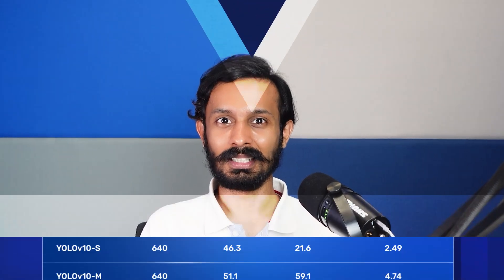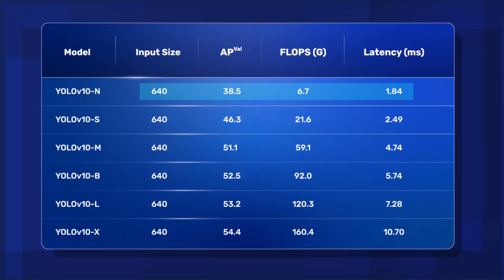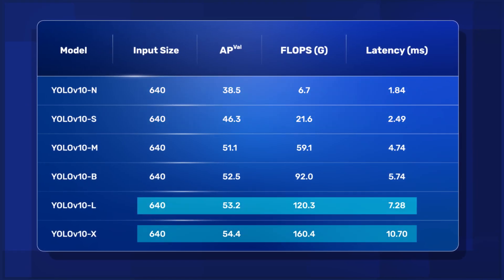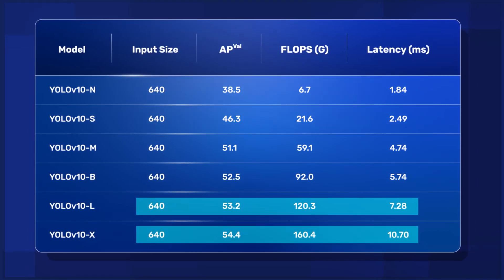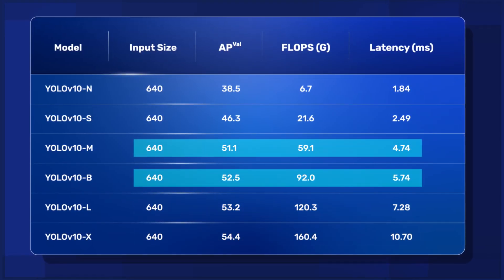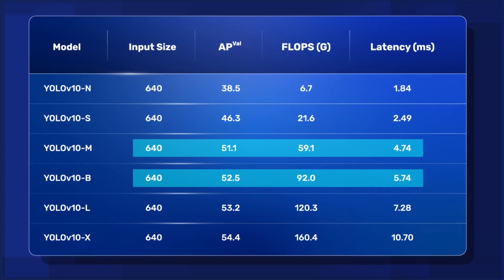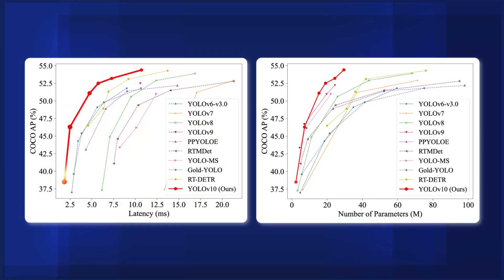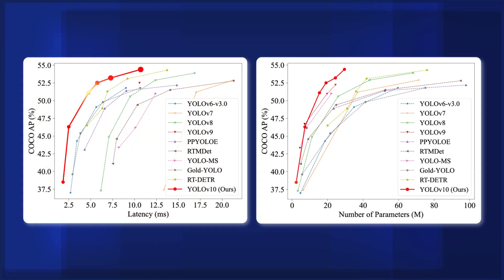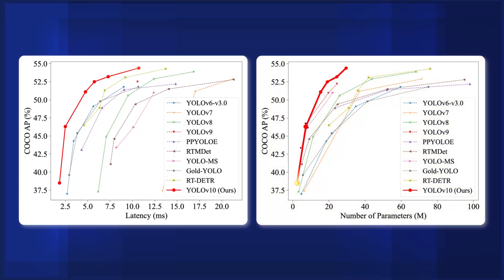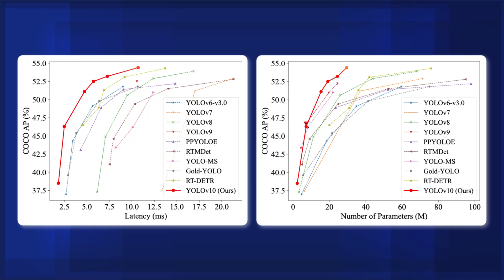YOLO V10 has released 6 models in total. The lightweight models like nano and small are great for mobile deployment, while large and extra-large models are best used when accuracy is of importance. The medium and balanced models offer middle ground, fitting both needs. According to their accuracy-latency graph, YOLO V10 models perform faster and more accurately than any other model, while their accuracy-size graph is neck-to-neck with models like YOLO V9.